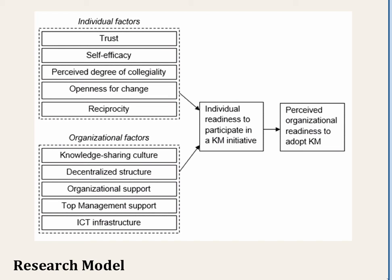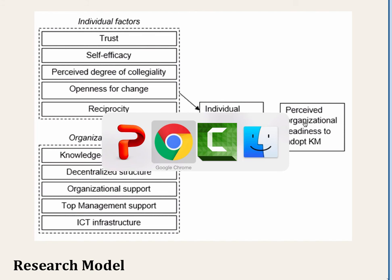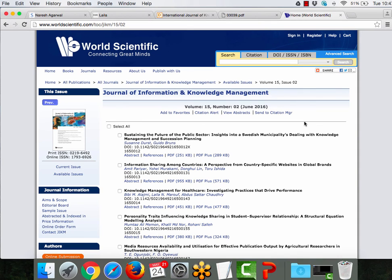For reciprocity: 'When I provide an answer to a colleague's question, I believe somebody will provide an answer to a question I might have.' For individual readiness: 'I will share my knowledge with more colleagues,' and 'I'll always provide my knowledge at the request of colleagues.' For perceived organizational readiness: 'I believe my university is prepared for effective KM,' and 'I believe my university is ready to adopt KM.' About three to five questions are provided for each construct, adapted from prior studies or self-developed. The full study appears in the Journal of Information and Knowledge Management, volume 15, number 3, September 2016.